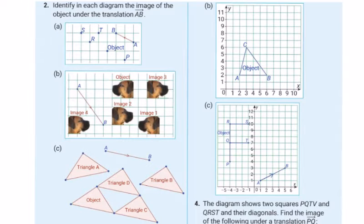In the next few videos we're going to look at some questions in relation to transformation geometry. Identify in each diagram the image of the object under the translation AB. Now, A to B is in this direction. Be careful not to go B to A.